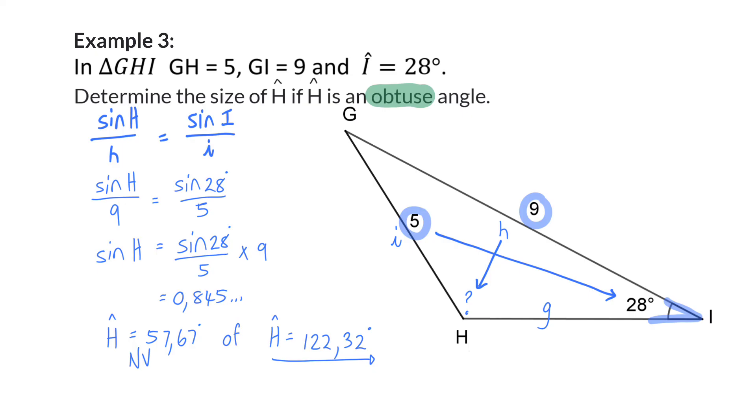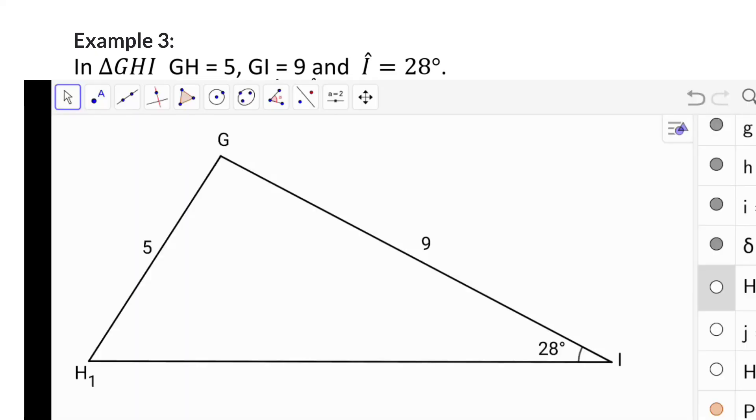If it wasn't given, either on the picture or in words, that H is an obtuse angle, both of these options would have been accepted. Let's see why.